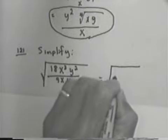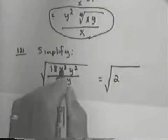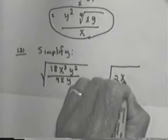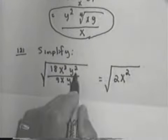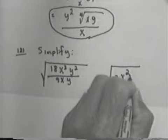18 divided by 9 is 2. x cubed divided by x is x squared. y squared divided by y is y.